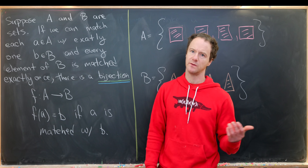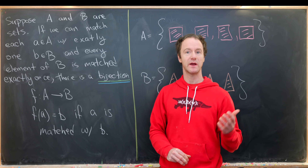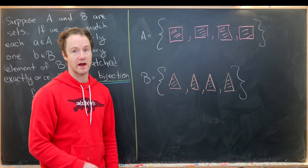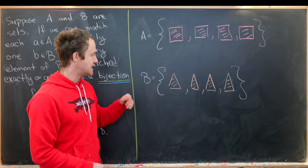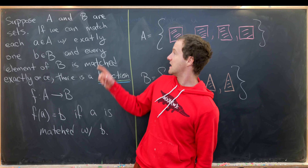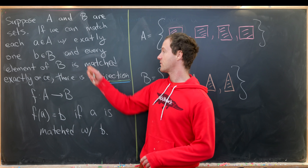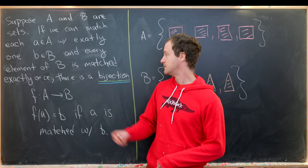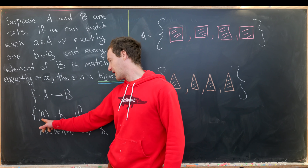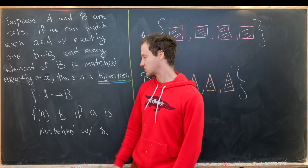A nice way of summarizing what we built up: suppose that A and B are sets. A could be the set of all four squares, and B could be the set of four triangles. Then if we can match each element a in A with exactly one element b in B, and every element of B is matched exactly once, then we say there is a bijection F from A to B. Furthermore, F(a) = b if a is matched with b — so this function F describes the matching.